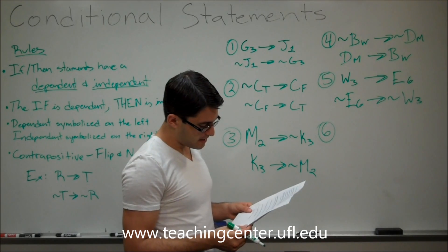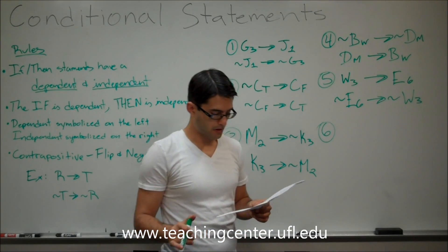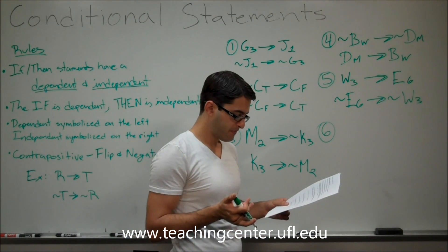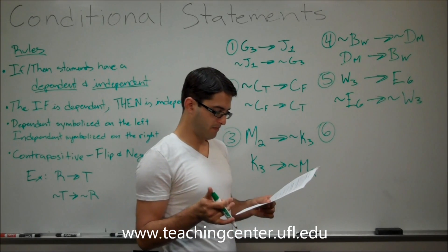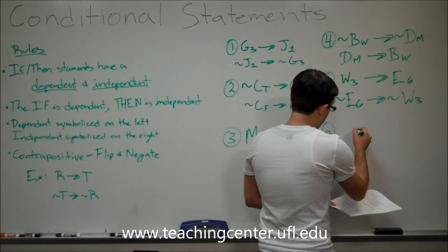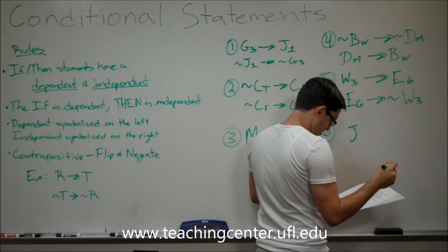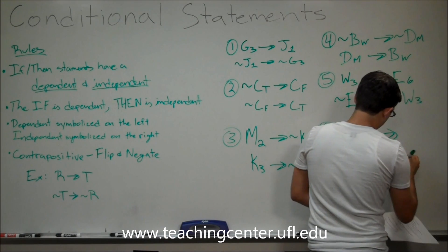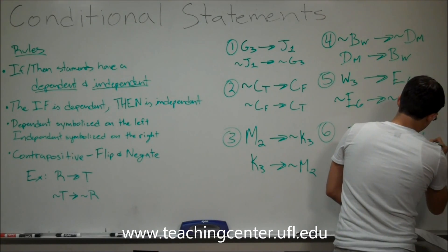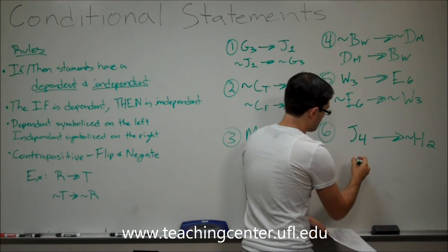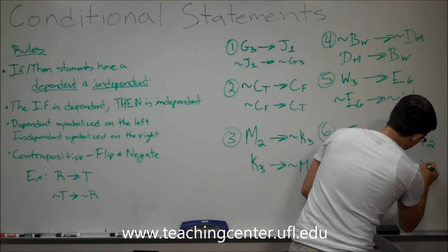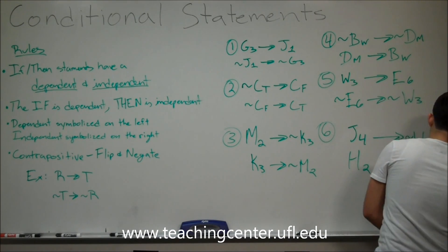Number six: Haley is not second in line if Joe is fourth in line. Again, it's the flipped version. You can turn it around to read: if Joe is fourth in line, then Haley is not second in line. Symbolized as J4 arrow not-H2. The contrapositive: if Haley is second in line, then Joe is not fourth in line.